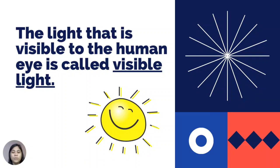For example, you see most plants as green because the leaves absorb all colors of the visible light except for green.